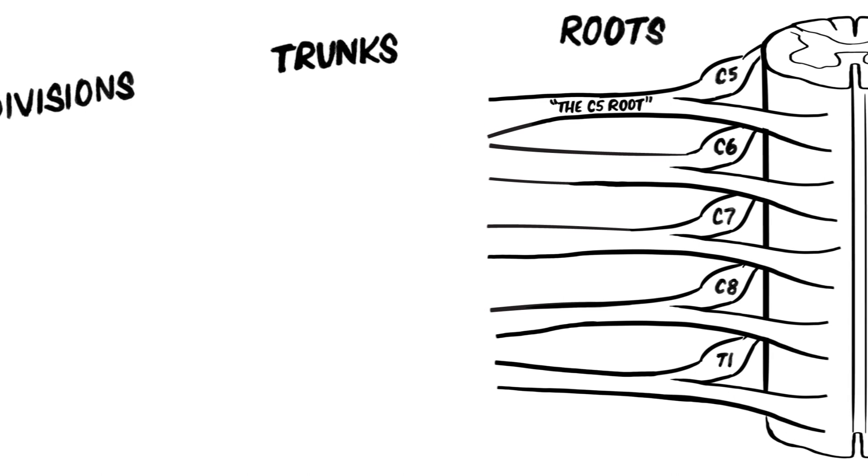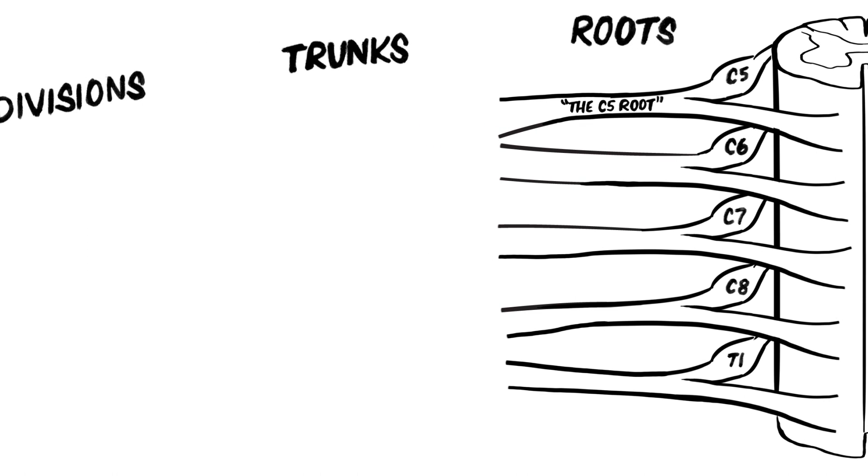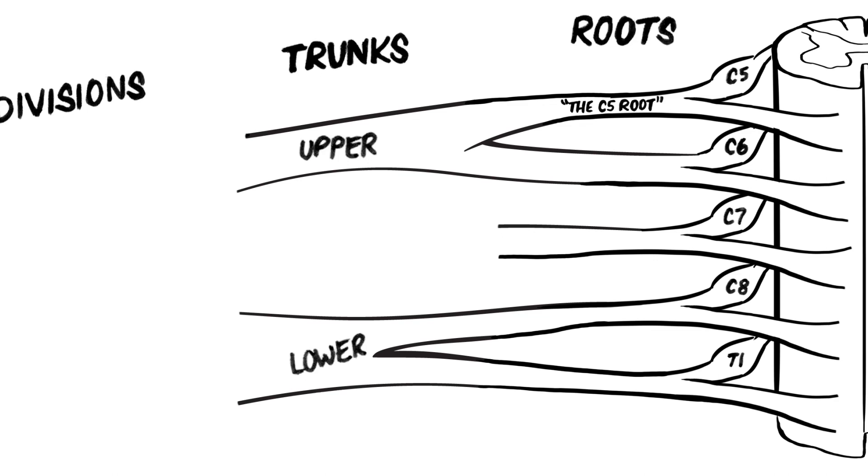More distally, the roots form the trunks. The C5 and C6 roots join together to form the upper or superior trunk. Likewise, the C8 and T1 roots join to form the lower or inferior trunk. Finally, the C7 root continues by itself to become the middle trunk.